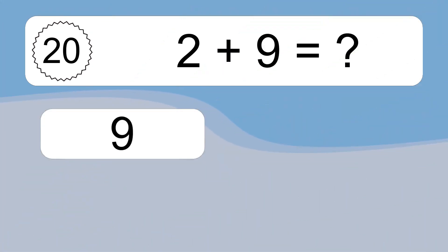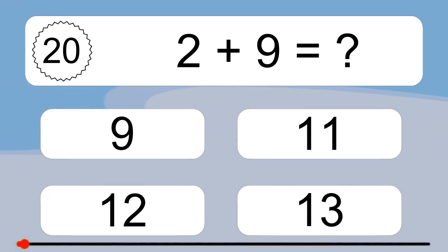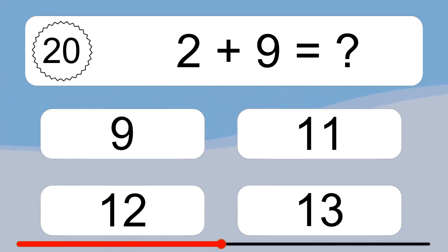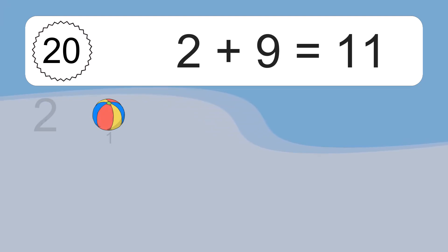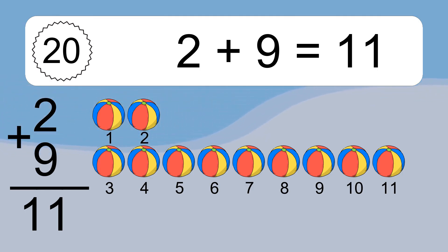2 plus 9 equals what? 2 plus 9 equals 11. Let's count it: 1, 2, 3, 4, 5, 6, 7, 8, 9, 10, 11.